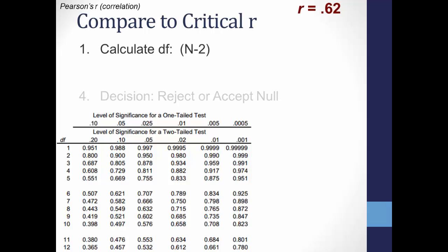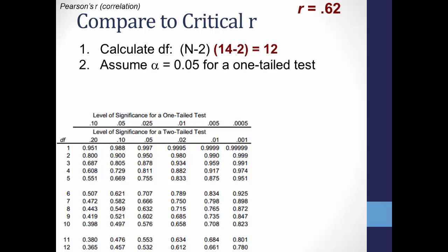First, we need to calculate degrees of freedom, which is n minus 2. We had 7 scores on the x variable and 7 on the y variable, for a total of 14 scores. 14 minus 2 equals 12 degrees of freedom — degrees of freedom refers to how many ways our data could be combined and still produce the same value for a statistic. Assuming an alpha level of 0.05 for a one-tailed test, find where 12 degrees of freedom intersect with a one-tailed test at 0.05, and that's 0.457 — our critical r value.